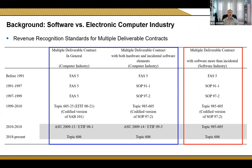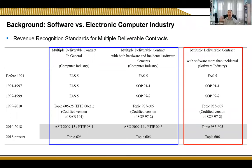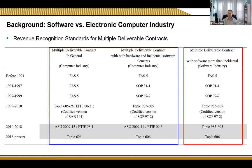I was a little confused by FAS-5. I thought that was loss contingencies. I didn't know if you meant SAB—Staff Accounting Bulletin—Topic 5, which was the SEC informal guidance about revenue needing objective evidence that it's earned and realizable. I just wanted to check whether your reference should be SAB Topic 5 instead of FAS-5. Okay, I will check that again. Thank you.